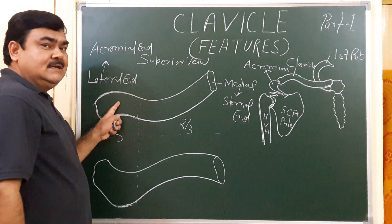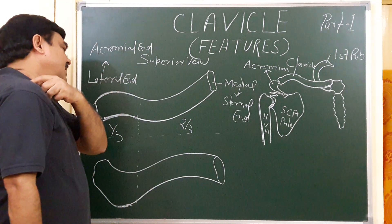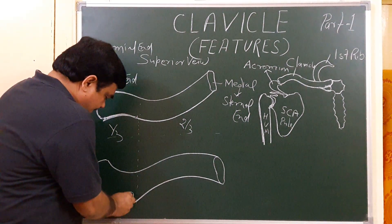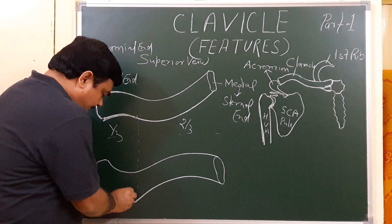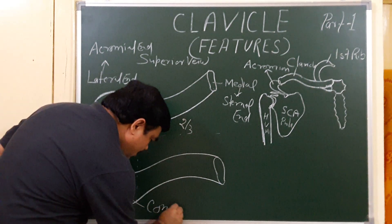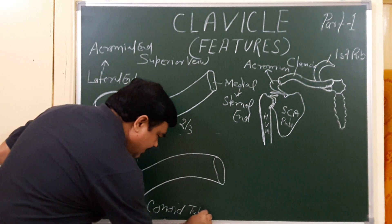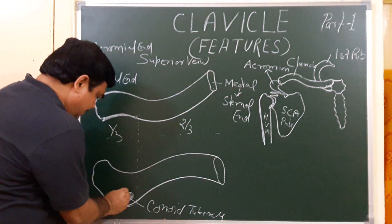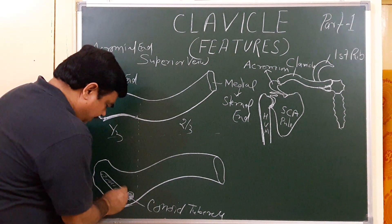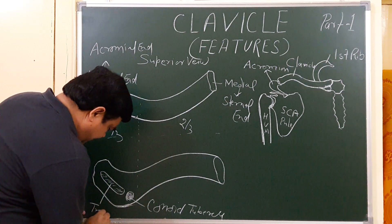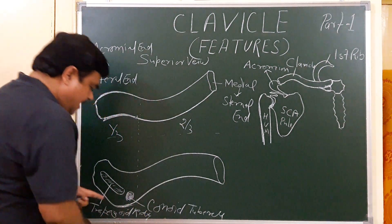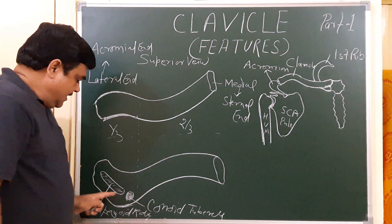The superior surface of the lateral one-third is subcutaneous — you can feel it through the skin. The inferior surface has a conical projection known as the conoid tubercle, and a ridge known as the trapezoid ridge. So it has a conoid tubercle and a trapezoid ridge.